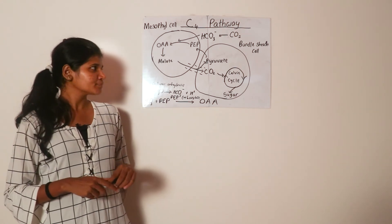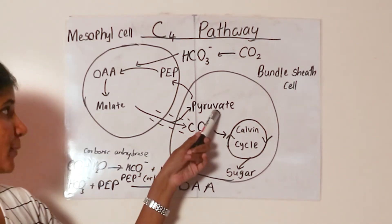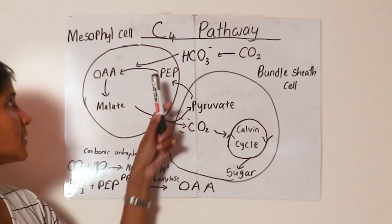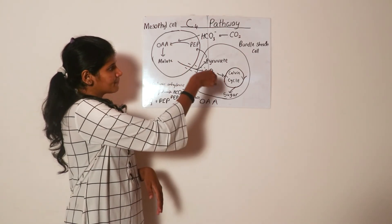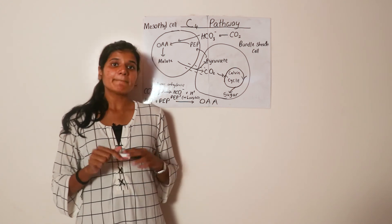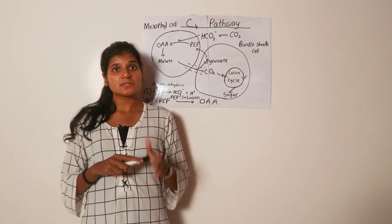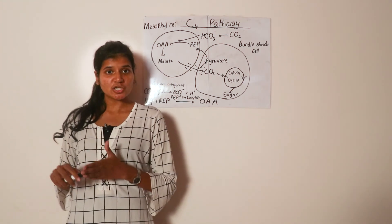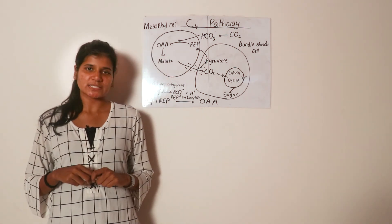The pyruvate in the bundle sheath cell diffuses back into the mesophyll cells and turns back into PEP, and this cycle repeats. So this is the C4 pathway — it mainly concentrates carbon dioxide in the bundle sheath cell so that, in the presence of RuBisCO, the Calvin cycle can function more efficiently, resulting in higher productivity of photosynthesis.